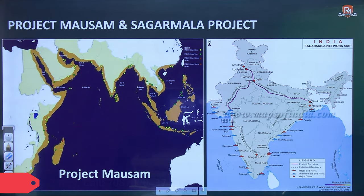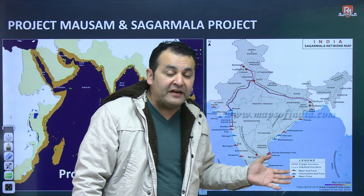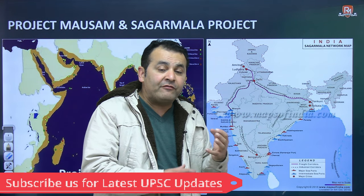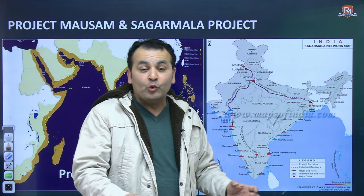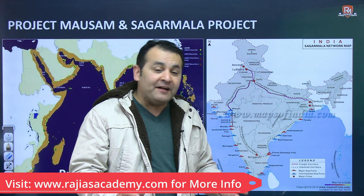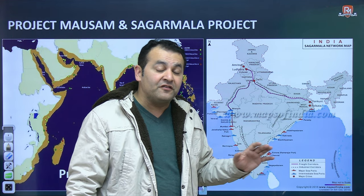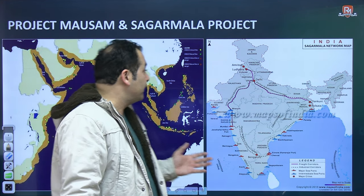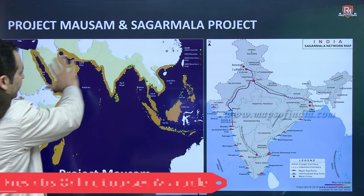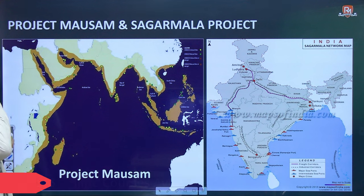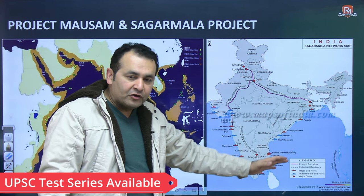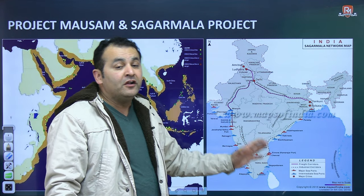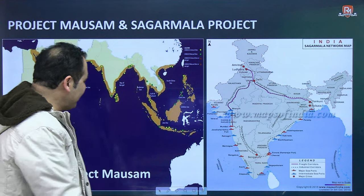Continuing, if we look at Project MOSEM and the Sagar Mala project — the Sagar Mala project is about connecting every dot: inland, riverine, cruise, trade, and security. Everything has to be robust now; we cannot take any chances. There is also the Sagar Ratna project. Project MOSEM aims to revive old relations with countries in the region, while the Sagar Mala network connects dots within India to enable swift trade, tourism, and security.